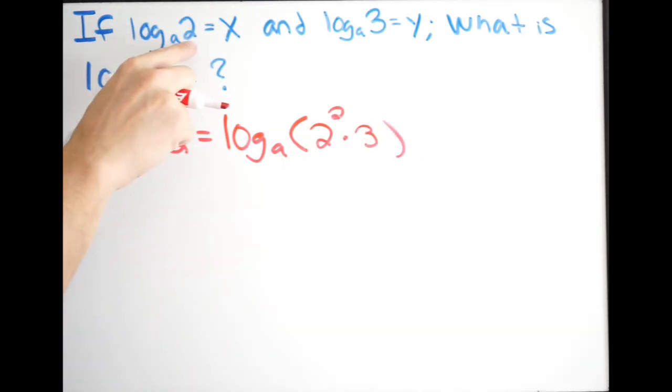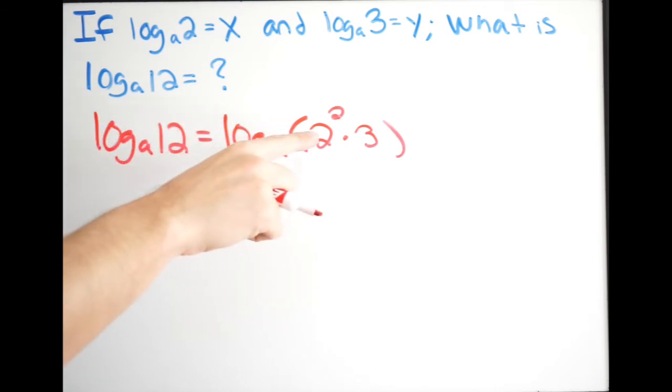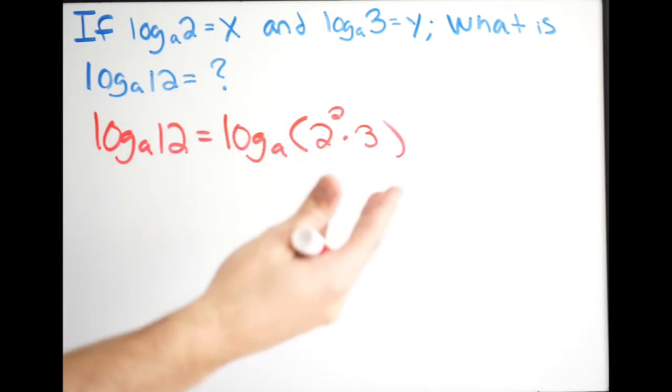I can say log base a of and then I'm going to put 2 to the second power times 3. So just using the values that I'm already provided in rewriting this, I now have if I do 2 to the second power that's 4 times 3 that's 12 and that would give me log base a of 12.